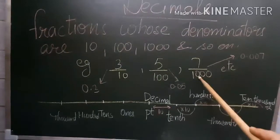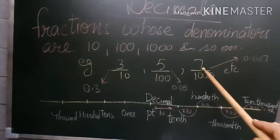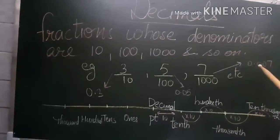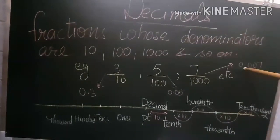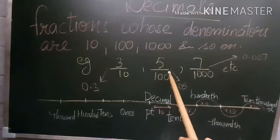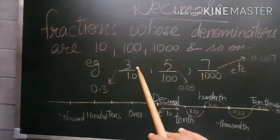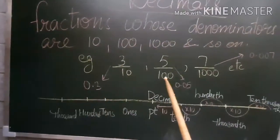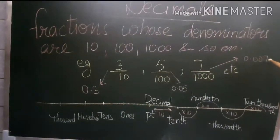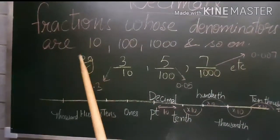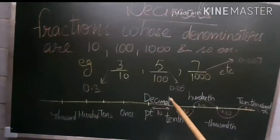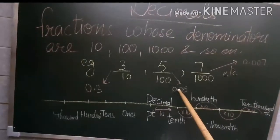For 7 by 1000, there are three zeros in the denominator but only one digit in the numerator. So I count from that place to make it three digits, putting two zeros after the decimal. The number becomes 0.007. Remember: one zero gives one place (0.3), two zeros give two places (0.05), three zeros give three places (0.007). These placeholder zeros have no value but help avoid confusion.